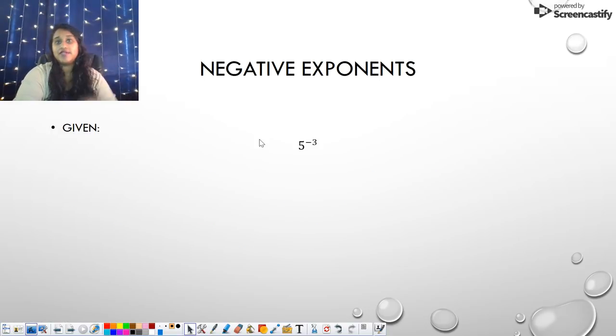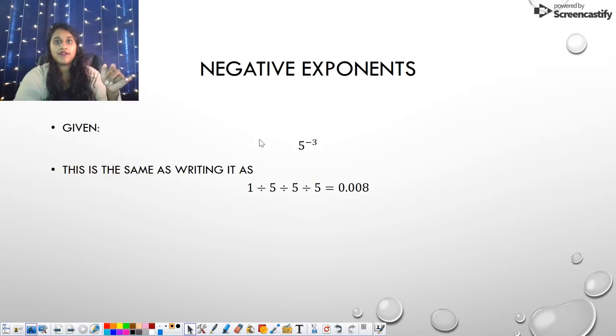But what happens when we have a negative exponent? In essence, a negative exponent is how many times something can be divided by itself. So if I have this example, 5 to the negative 3, that can also be rewritten as 1 divided by 5, divided by 5, divided by 5. And I plug that into a calculator, you get 0.008.